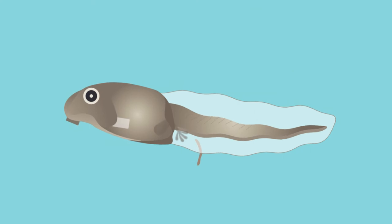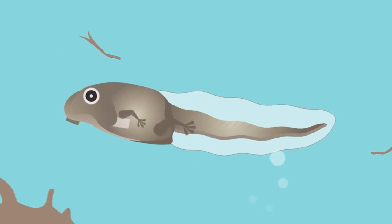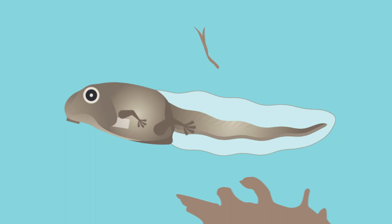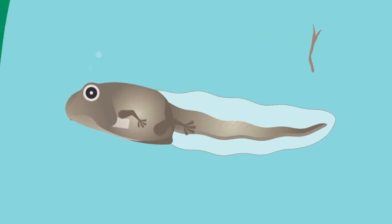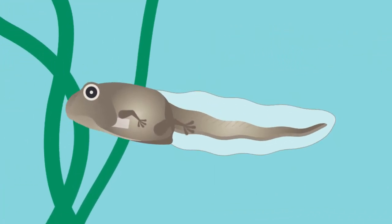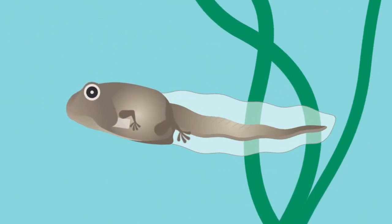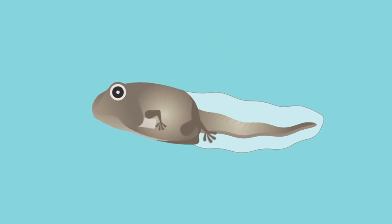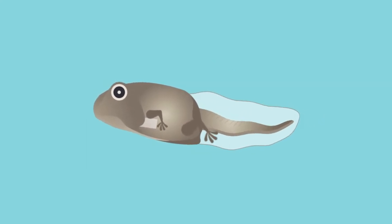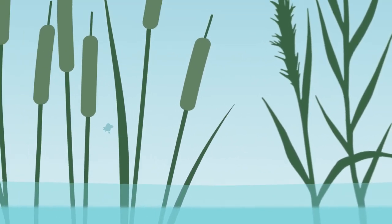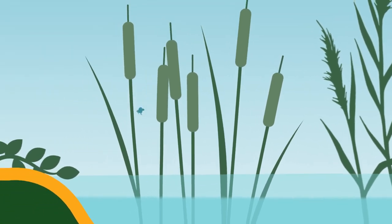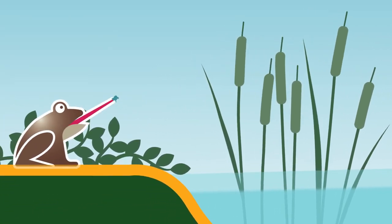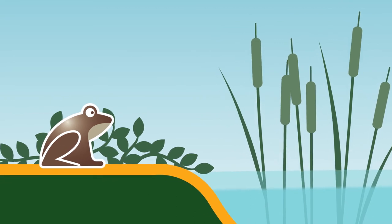Hind limbs gradually appear, followed by forelimbs. The head and jaw change shape to resemble that of a frog, while the tail remains. Gradually, lungs develop to replace the gills and the tail shrinks in towards the body as it is reabsorbed, providing sustenance for the metamorph until it can catch its own food. The young frog, usually less than half the size of the adult, is known as a metamorph through this final process. It will emerge from the water and begin its life on land, transitioning to a predatory diet of insects.